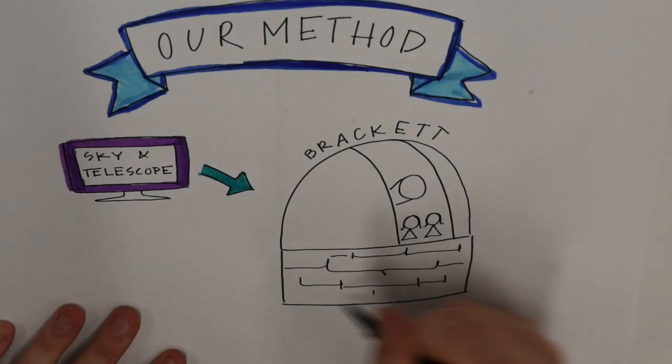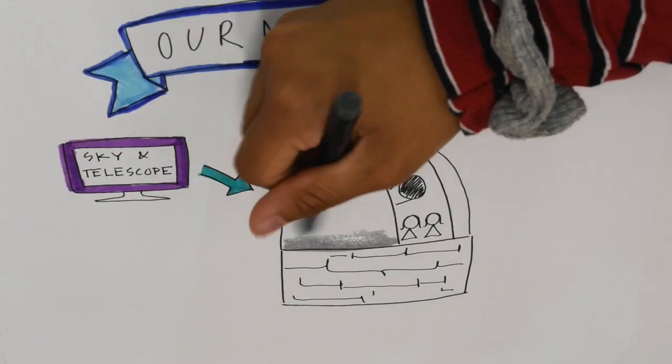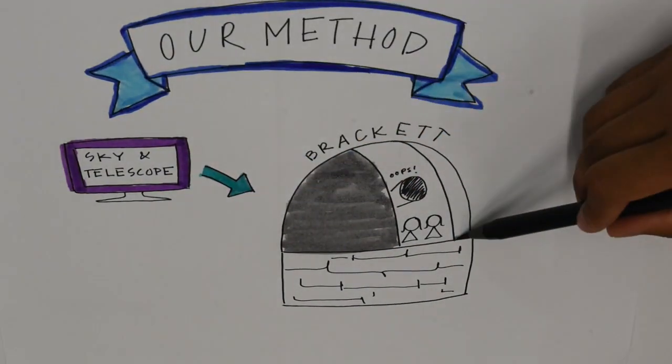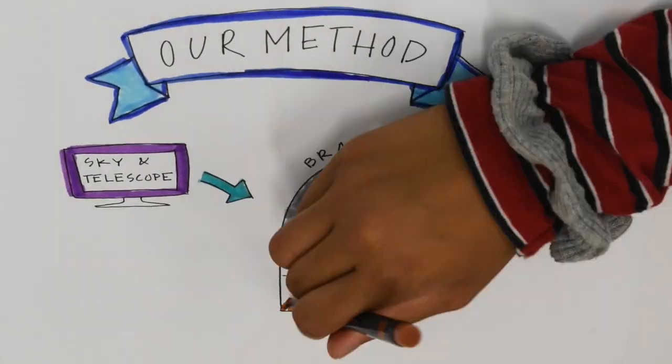Unfortunately, we forgot to remove the lens cap and missed the transit. We did capture images of Jupiter, though. Here, you can see Jupiter and three moons. It's too bright to resolve Io transiting in front of Jupiter.